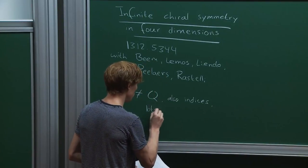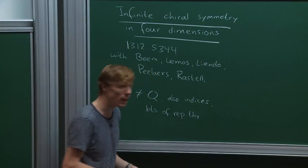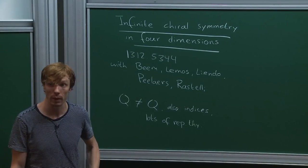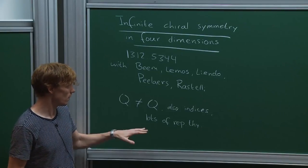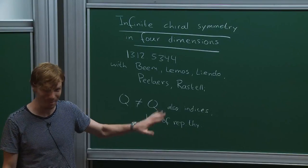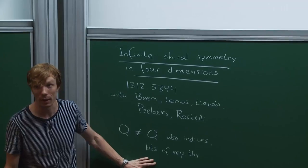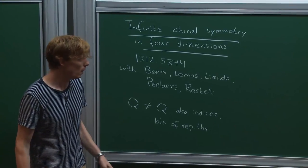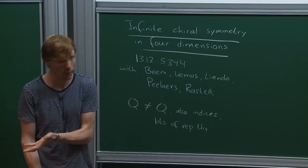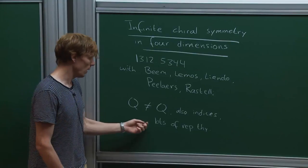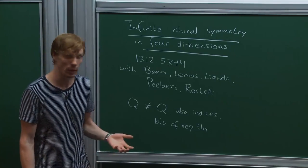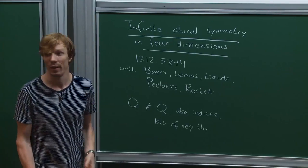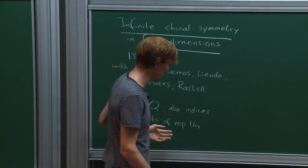A third apology: at the beginning I would like to discuss in quite some detail the representation theory of the superconformal algebra we'll be considering. This means you will have a solid background in the representation theory of this algebra, hopefully. It comes at the expense of talking about Cairo algebras, but I think it's a worthwhile trade-off, because if you understand the representation theory, it's much easier to understand the Cairo algebras and the bootstrap approach to 4D N=2 superconformal field theories.